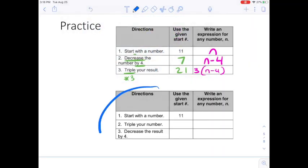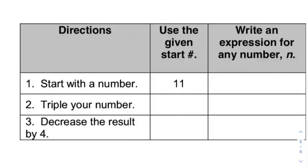Now we're going to do something really similar down here. You notice it looks almost the same, but we're going to flip that triple and decrease step to show you that order of operations matter. So we're going to start off by tripling our number, so multiplying 11 by three, that's 33, and then we're going to decrease by four, which means subtract four. So subtracting four from 33, we get 29.